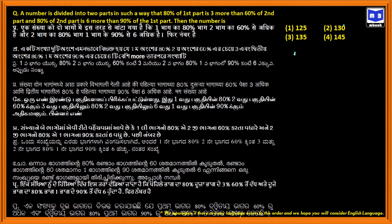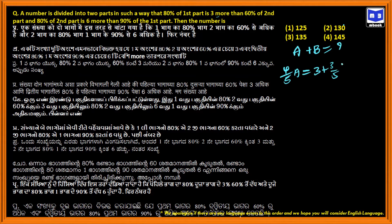Let part one be A and part two be B. Then 80 percentage of the first part equals three more than 60 percentage of the second part. That is, 0.8A = 0.6B + 3, which gives us the first equation.